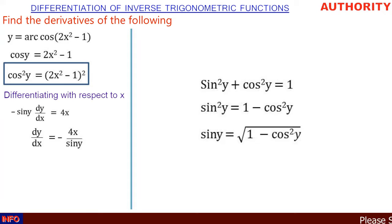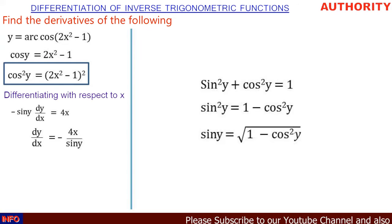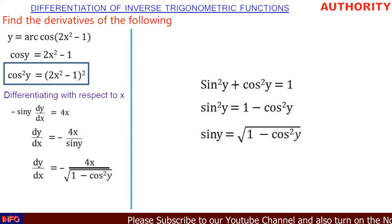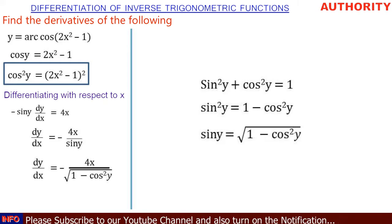In this function, dy/dx = -4x / sin y. We can replace sin y with the value we just obtained, so dy/dx = -4x / √(1 - cos²y).